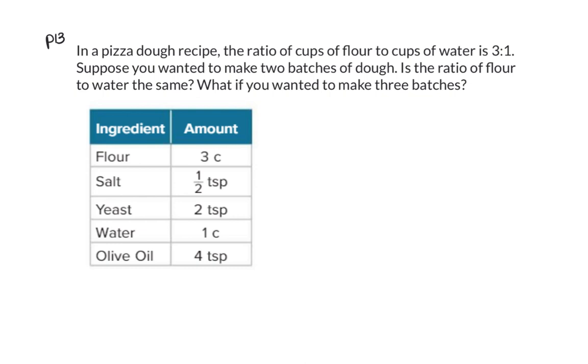Let's say we were making a pizza dough recipe and the ratio of cups of flour to the cups of water is 3:1. If we wanted to double the batch or triple the batch, will we still have that same ratio?